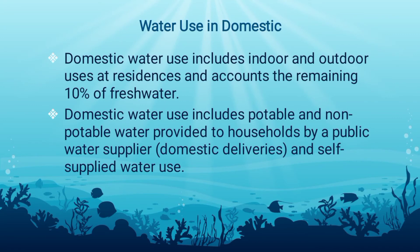Water use in domestic settings. Domestic water use includes indoor and outdoor uses of residences, and it accounts for the remaining 10% of freshwater. It includes uses such as drinking, food preparation, bathing, washing clothes and dishes, flushing toilets, watering lawns and gardens, and maintaining pools. Domestic water use includes potable and non-potable water provided to households by a public water supplier, or domestic deliveries, and self-supplied water use. Self-supplied domestic water use is typically withdrawn from a private source such as a well, or captured as rainfall or rainwater in a cistern.